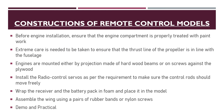Now let's move on to the construction of remote control models. First, ensure that the engine compartment is properly treated with paintwork before engine installation. Extreme care is needed to ensure that the thrust line of the propeller is in line with the fuselage. The engines are mounted either by projections made out of hardwood beams or screws against the plywood. Install the radio control servo as per requirement to make sure that the control rods can be moved freely. Wrap the receiver and battery pack together and place it in the model, then assemble the wing using rubber bands or screws. Once complete, it's ready for demo and practicals.